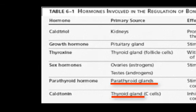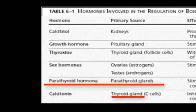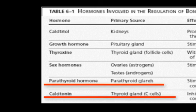Too high or too low blood calcium, and these glands respond with their respective hormones. The parathyroid gland secretes parathyroid hormone in response to low blood calcium levels, and the thyroid gland secretes calcitonin in response to high blood calcium levels.